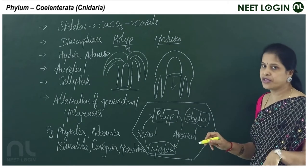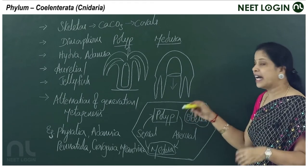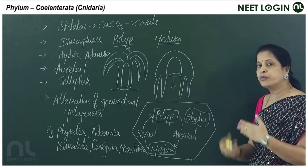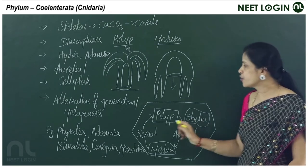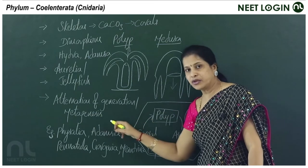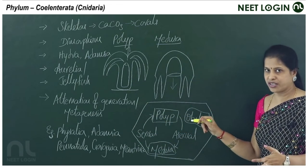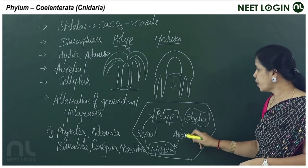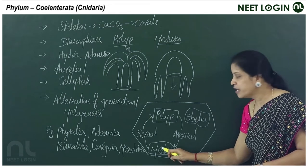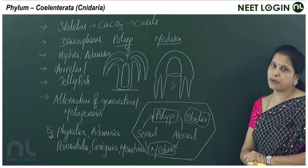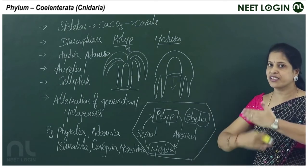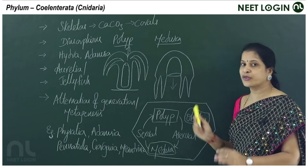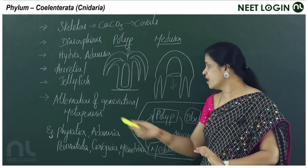In cnidarians possessing both polyp and medusa forms, they show alternation of generations, also called metagenesis. The polyp form undergoes asexual reproduction to form the medusoid form, and the medusoid form undergoes sexual reproduction to form the polyp form — asexual followed by sexual, and vice versa. Obelia is a good example of metagenesis.